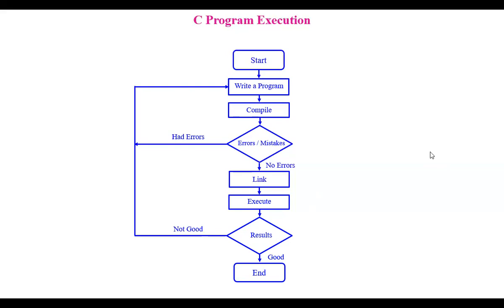If you observe the overall flowchart: if there are errors at the compile stage, you go back and make corrections following the loop. Once errors are corrected, you come down to the link section. If results are not good, you follow that path again. This overall flowchart gives a complete picture of how a program should be executed. With this, we have seen what an algorithm is and the execution of a C program in detail. All the best — let's meet in the next module. Thank you.